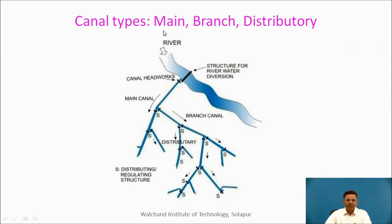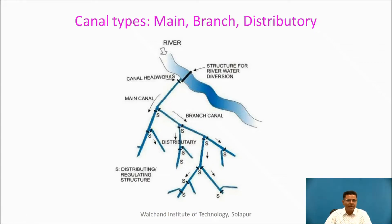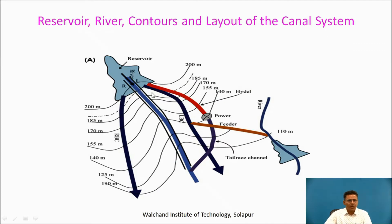Canals can be classified as main canal, branch canal, distributory, minor, and so on. This schematic gives us the idea about the layout of a canal irrigation system. There is a river with a diversion head work, from which the canal starts. This is a main canal, which provides water to branch canals. From the branch canals, a number of distributories go further. From the distributories, minors take water and distribute it over the fields through field channels. Now, let us see a reservoir, a river, ground contours, and with reference to that, the layout of the canal system.